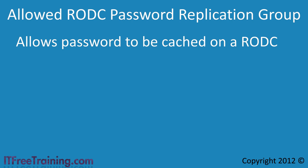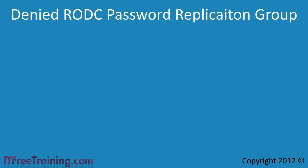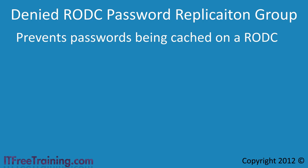The next group is Denied RODC Password Replication. This group prevents a user's password from being cached on a read-only domain controller. If a user is a member of both the allowed and denied groups, the denied group will always override the allowed permissions. Keep in mind that no account will be cached on read-only domain controllers unless configured, but this group allows you to quickly prevent a sensitive account from being cached if it was included in the allowed group, perhaps because it was a member of another group.